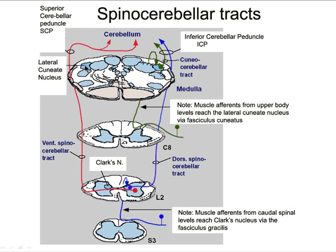The lateral cuneate nucleus is just lateral to nucleus cuneatus — gracilis, cuneatus, trigeminal complex, lateral cuneate nucleus. So the signal travels up and synapses in the lateral cuneate nucleus. Then the second order fibers come out, join up with fibers of the dorsal spinal cerebellar tract, leap into the inferior cerebellar peduncle, and seek out the paravermal areas of the cerebellum.